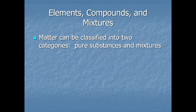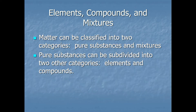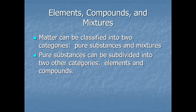We can classify matter into two main categories: pure substances and mixtures. The big difference is that pure substances have a definite composition — they are always made of the same stuff in the same proportions. Mixtures can vary in their composition. Pure substances can be subdivided into two further categories: elements and compounds.